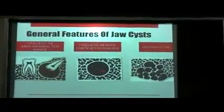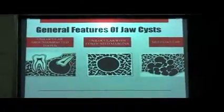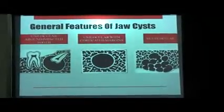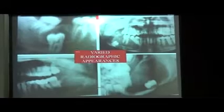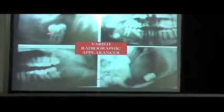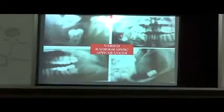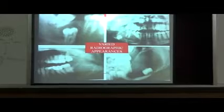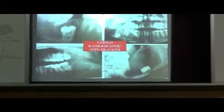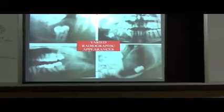These are the varied radiographic appearances of the cysts. They can be unilocular around an impacted tooth, unilocular with corticated margins, or they can be multilocular. You can appreciate an unerupted tooth having a unilocular radiolucency surrounding it. This is also an unerupted tooth with multilocular radiolucency surrounding it. This is a multilocular radiolucency extending into the ramus region in the mandible. This is an unerupted tooth with almost unilocular wide radiolucency.